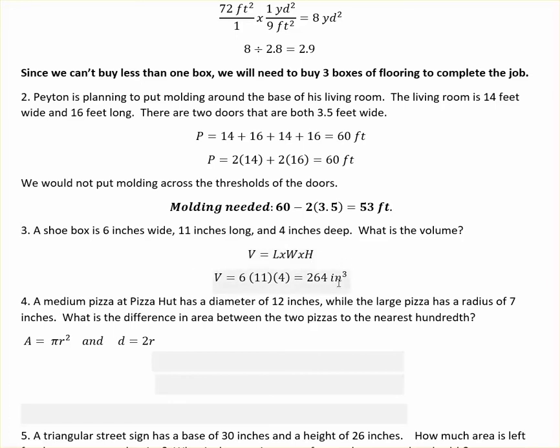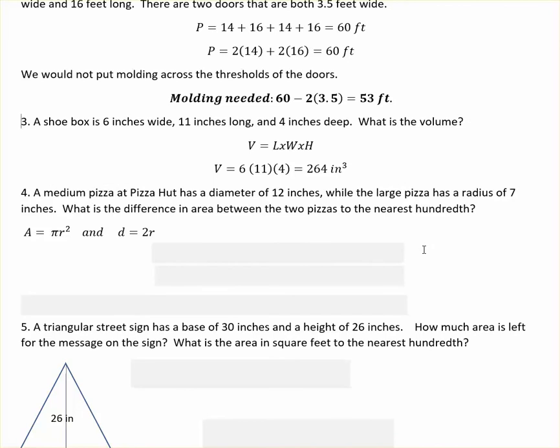A medium pizza at Pizza Hut has a diameter of 12 inches, while the large pizza has a radius of seven inches. What's the difference in area between the two pizzas to the nearest hundredth? Area equals πr². If I take two radii I get a diameter, so diameter divided by two gives me a radius. The 12 inch pizza has a diameter of 12 inches, so we cut that in half to get radius of six. So we have 3.14 times radius squared, which gives us 113.04 inches squared. Again, if you're talking about area, your units are going to be to the second power.